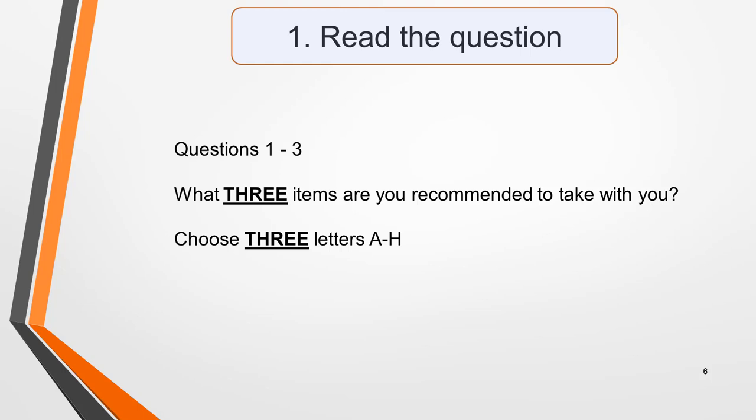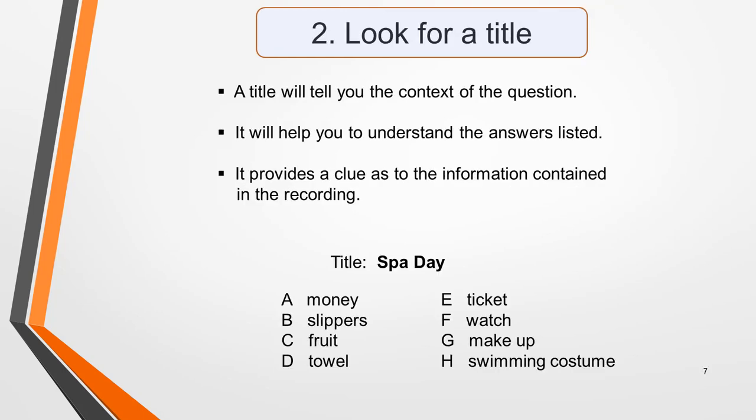For our sample question, we must choose three answers. With this sort of question, underline or circle the three to remind you. Next, look for a title. Not every question will have a title, but if there is one, it will tell you the context of the question. This will help you to understand the answers listed and give you a big clue as to what sort of information would be contained in the recording. Our sample question has the title Spa Day. Knowing this context gives some collective meaning to the words in the list of possible answers, which would otherwise appear random and unrelated.